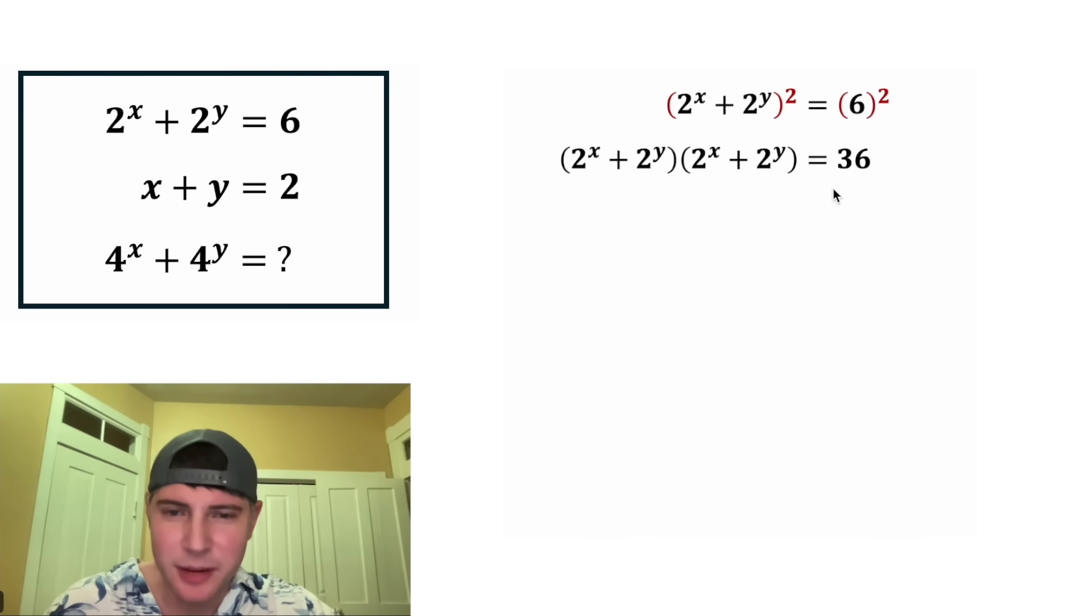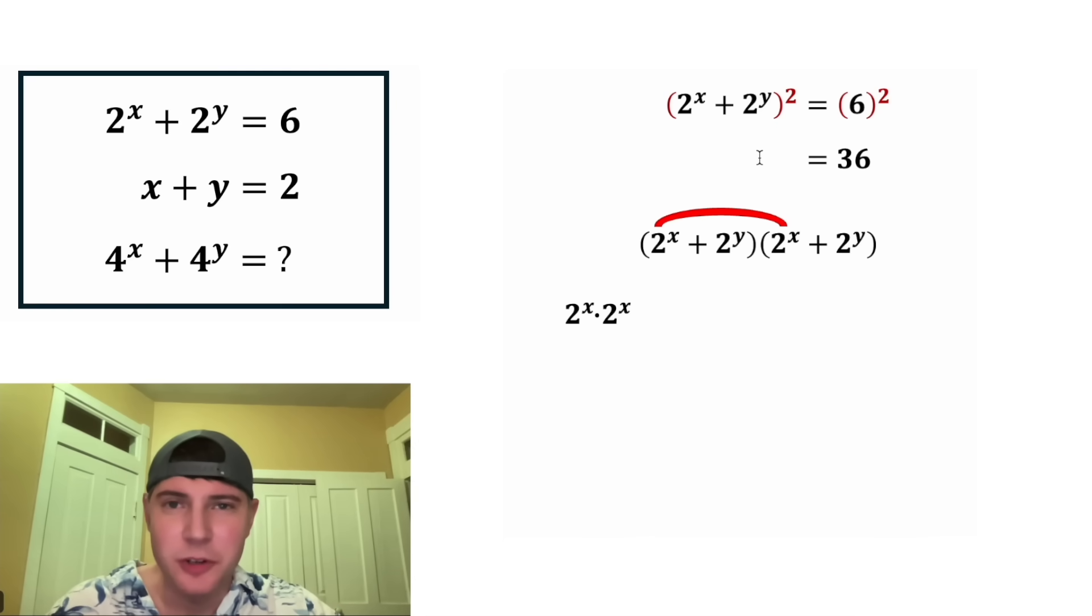So what is this times this? Let's bring it down here. We're going to multiply all this out. We're going to do 2 to the x times 2 to the x plus 2 to the x times 2 to the y plus 2 to the y times 2 to the x plus 2 to the y times 2 to the y.